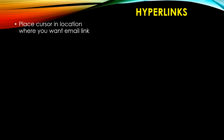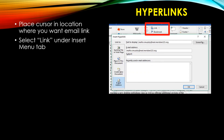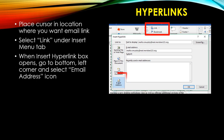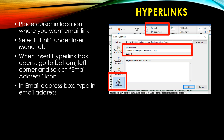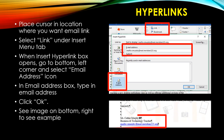Inserting an email hyperlink into a memo or a letter. Place your cursor in the location where you want the email link. Select Link under the Insert menu tab. When the Insert Hyperlink box opens, go to the bottom left corner and select the Email Address icon. In the email address box, type in the email address, then click OK. Make sure that you proof your email address so that it is correct. Look at the image at the bottom right to see an example of how you would put an email address for the sender of the letter at the end of the document.